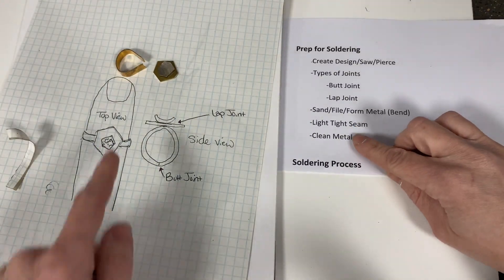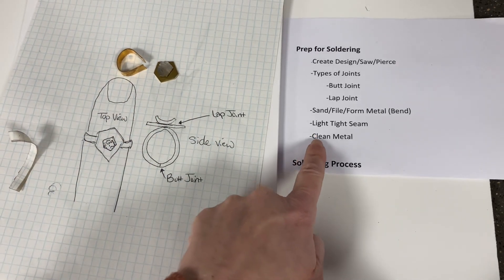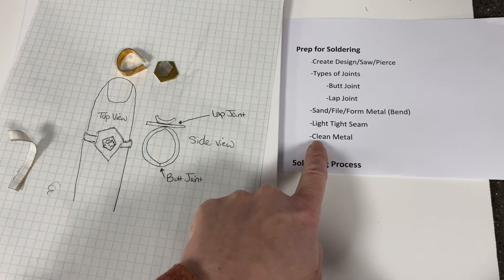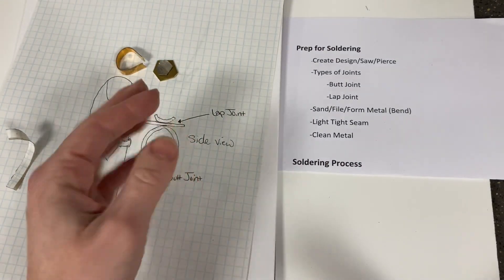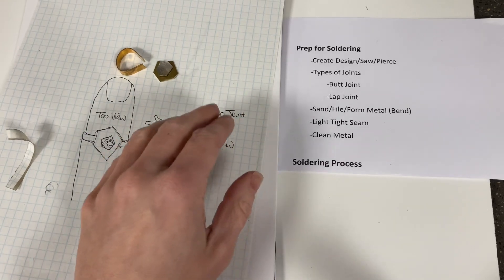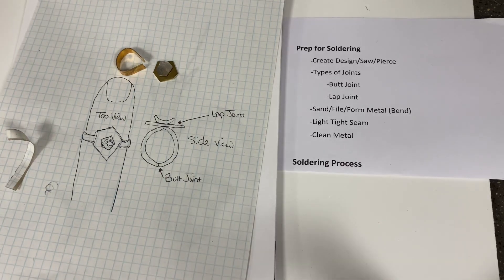And then the last thing, once I have my light tight seam, I've sanded my pieces, then I want to go and use some soap and water on them in the sink before I solder. The oil and grease from our hands kind of works as a resist and it means that the solder won't flow as well. So you always want to clean your metal before going on to the soldering process.